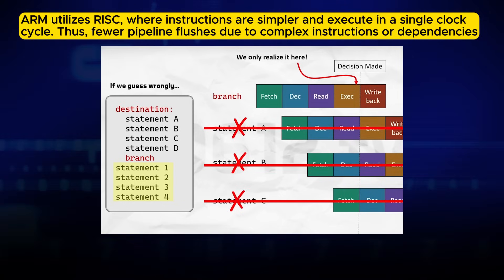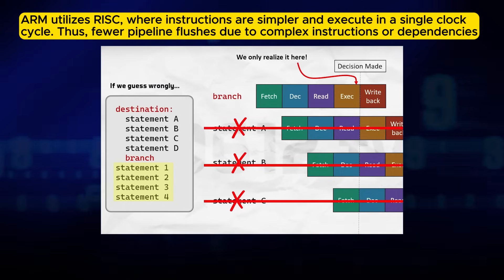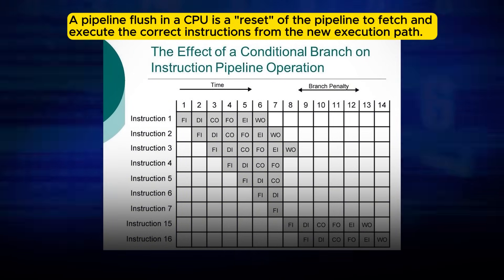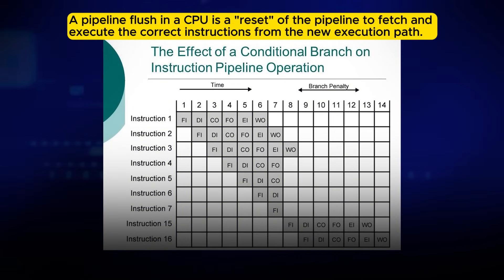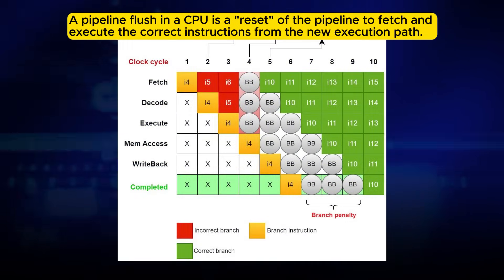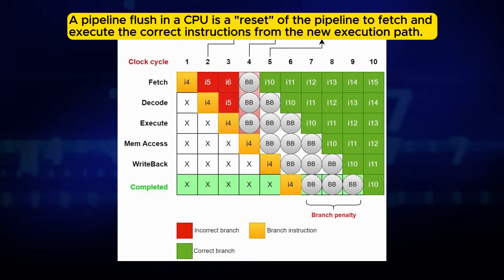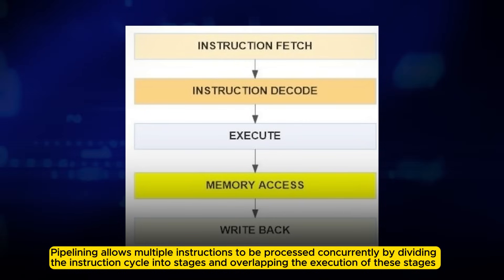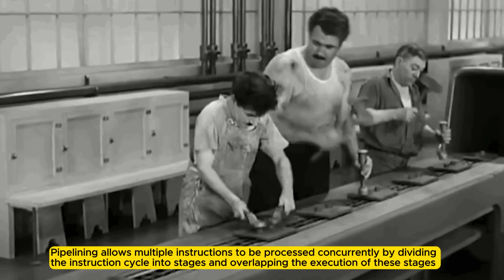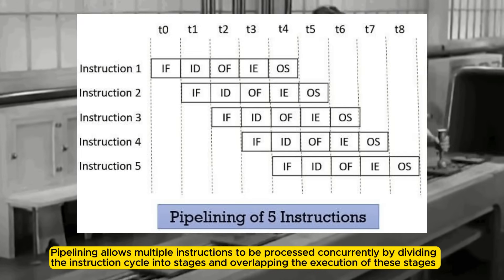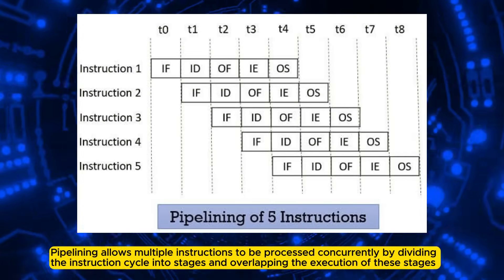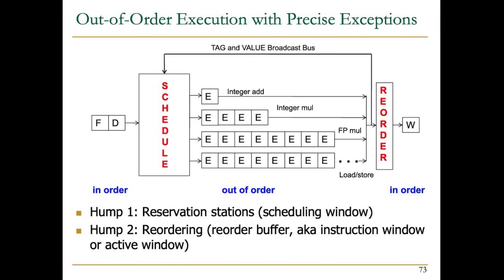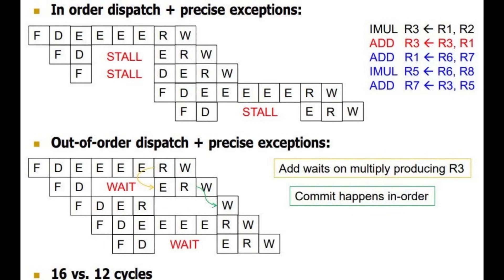ARM's simpler structure enables faster instruction fetch and decode with fewer pipeline flushes and simpler scheduling logic. In CPU pipelining, a pipeline flush is the process of discarding partially executed instructions from the pipeline when a branch or other control flow change occurs, or when data used by instructions in the pipeline might have been invalidated. This ensures that the CPU executes the correct sequence of instructions by clearing out instructions fetched along the wrong path and fetching new instructions from the correct location. Pipelining breaks down instructions into stages that can be executed simultaneously, similar to an assembly line, allowing multiple instructions to be in different stages of execution at the same time and increasing overall instruction throughput.